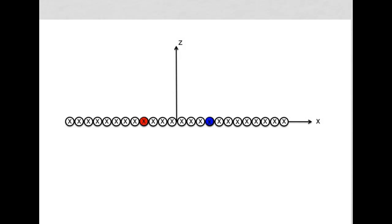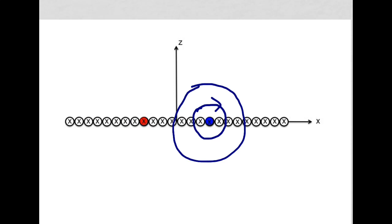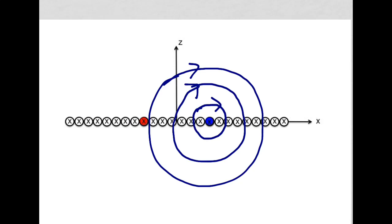Let's focus on one of these current elements right here. We know the form of the magnetic field intensity due to an infinite line of current. If you put the thumb of your right hand in the direction of the current, your right fingers will point in the direction of the circles of magnetic field intensity around this current filament. The magnitude of these field intensity lines is given by I over 2π times d, where d is the distance from the current filament to the field line.